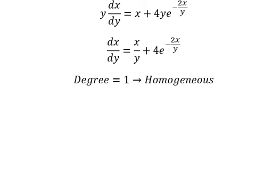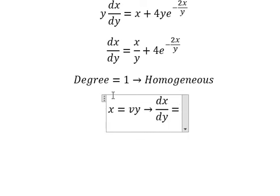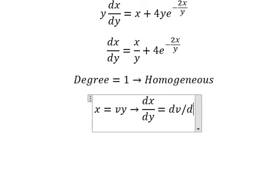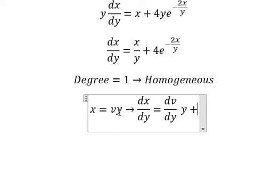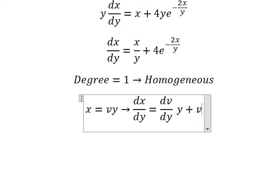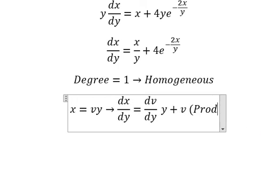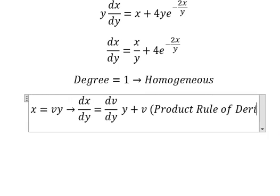So I will put x equals vy. If I do first derivative for both sides, we have dx over dy. First derivative of v, we have dv over dy multiplied by y, plus first derivative of y, you get 1. So we have v in here. This is the product rule of derivative.